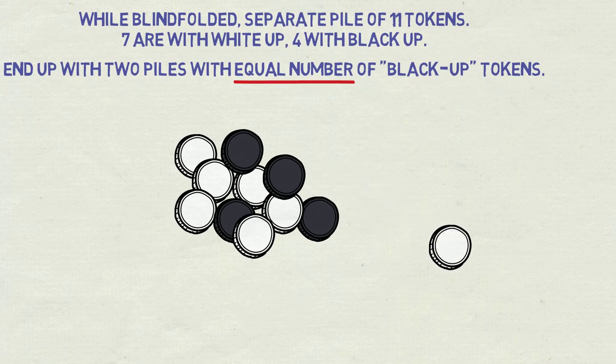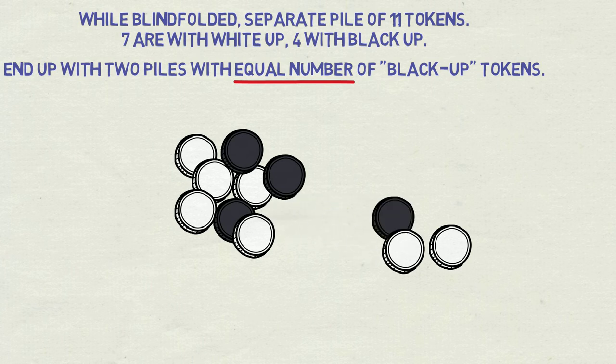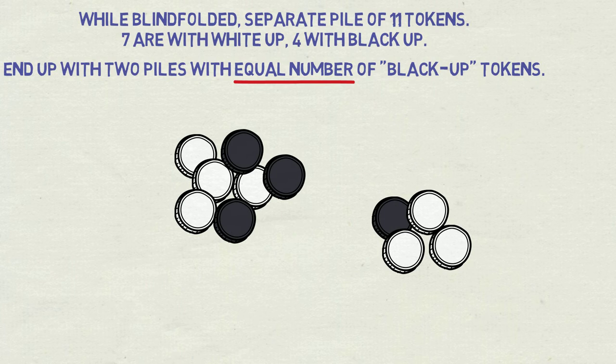10 and 1, 8 and 3, 7 and 4? Yes, 7 and 4 rings a bell, because there are 7 tokens of one color and 4 of the other. So separating them in these proportions, even blindly, would be a unique way. So let's go with that and see where it takes us.